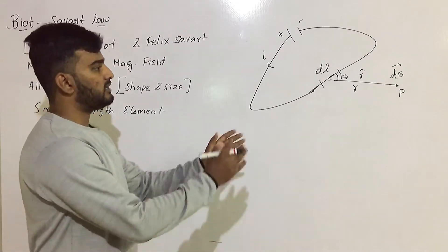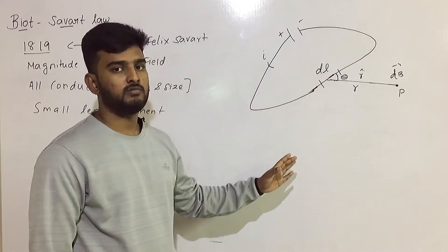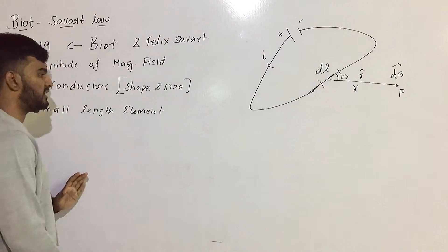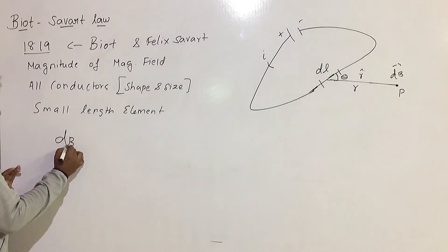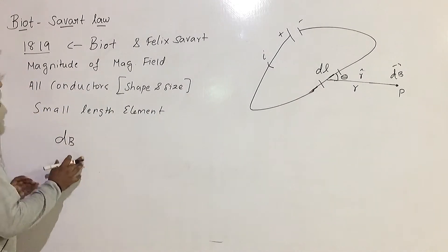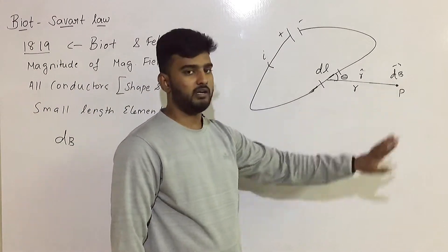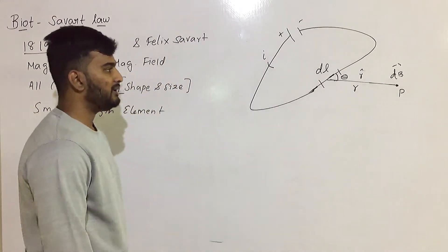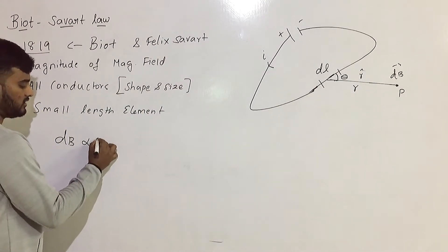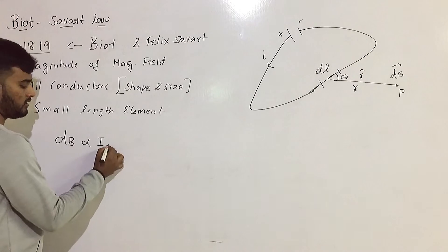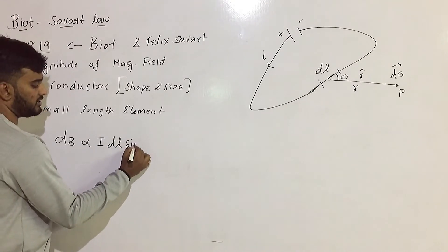Now, with this setup, the magnitude of the magnetic field dB at point P is directly proportional to the current i, the length element dL, and sin theta.